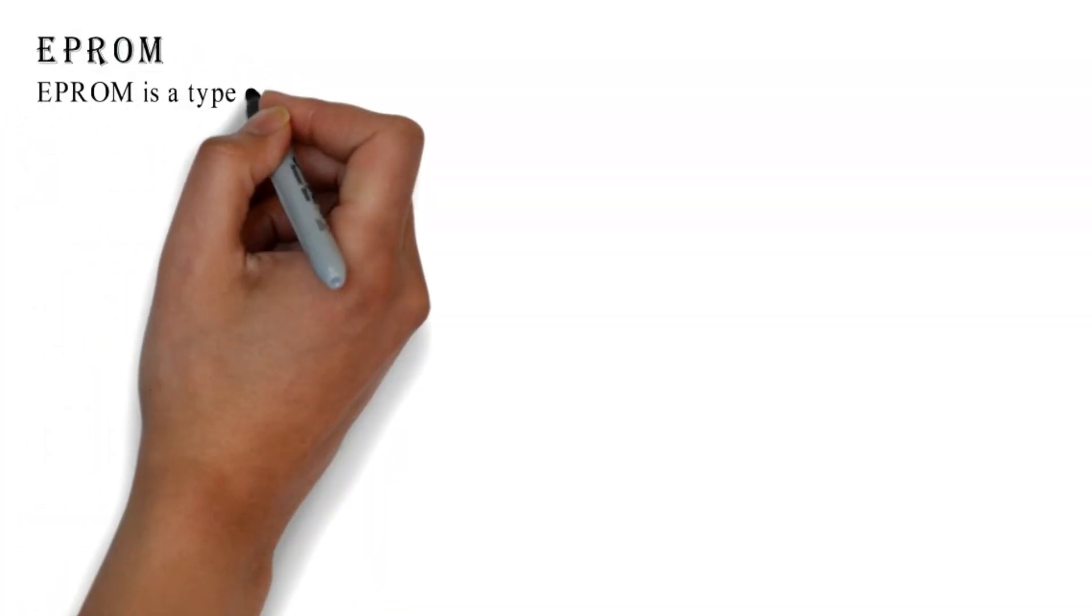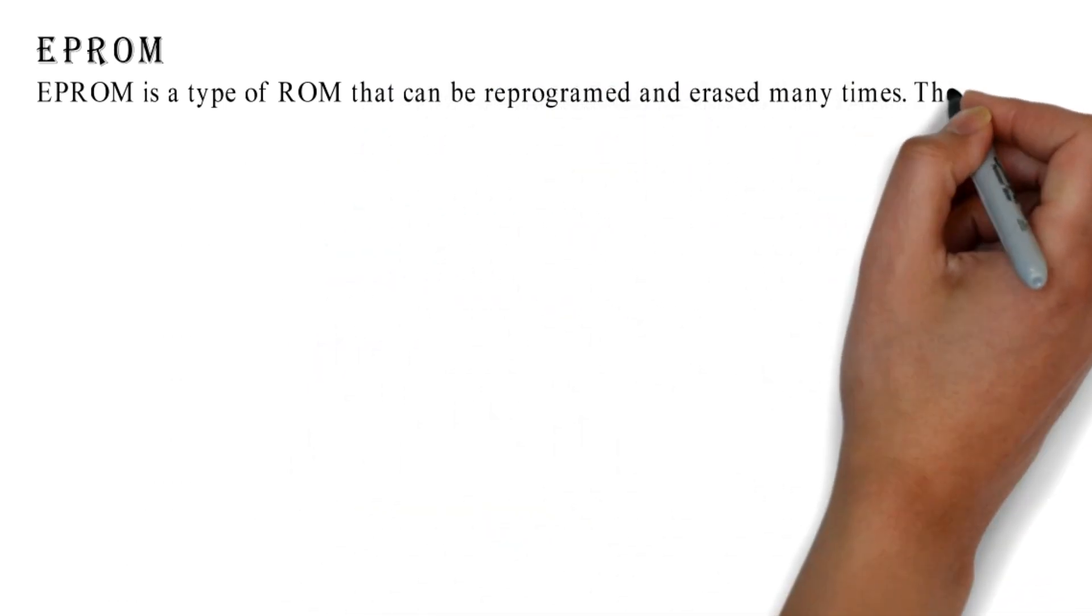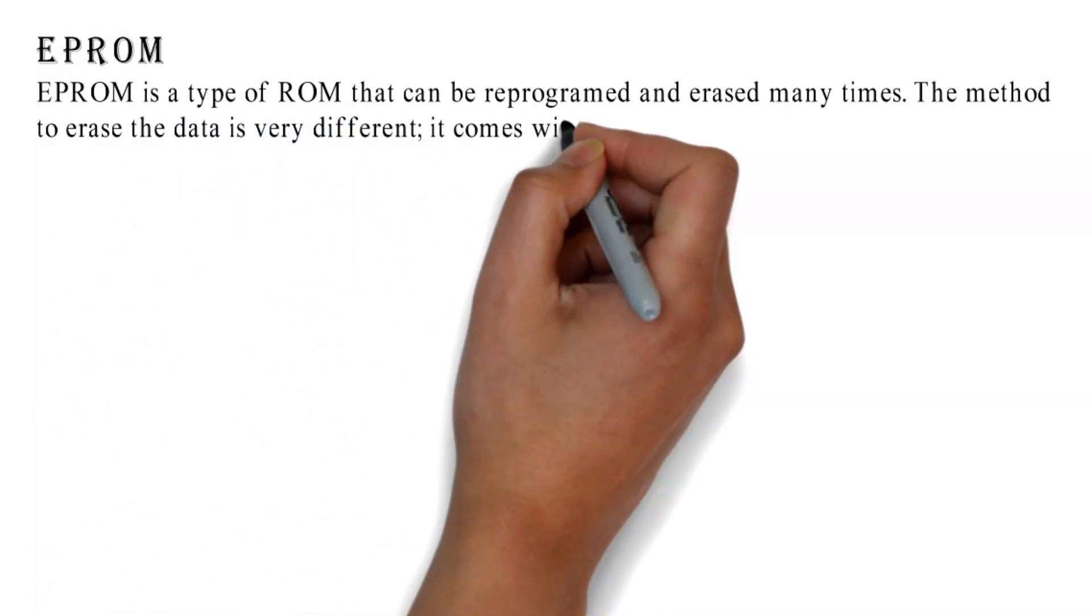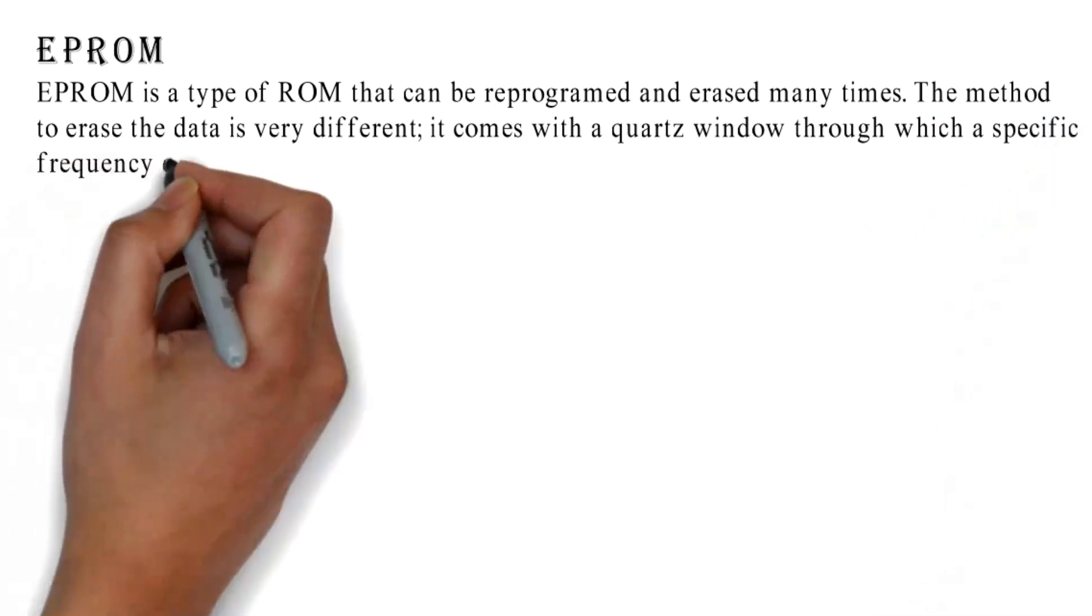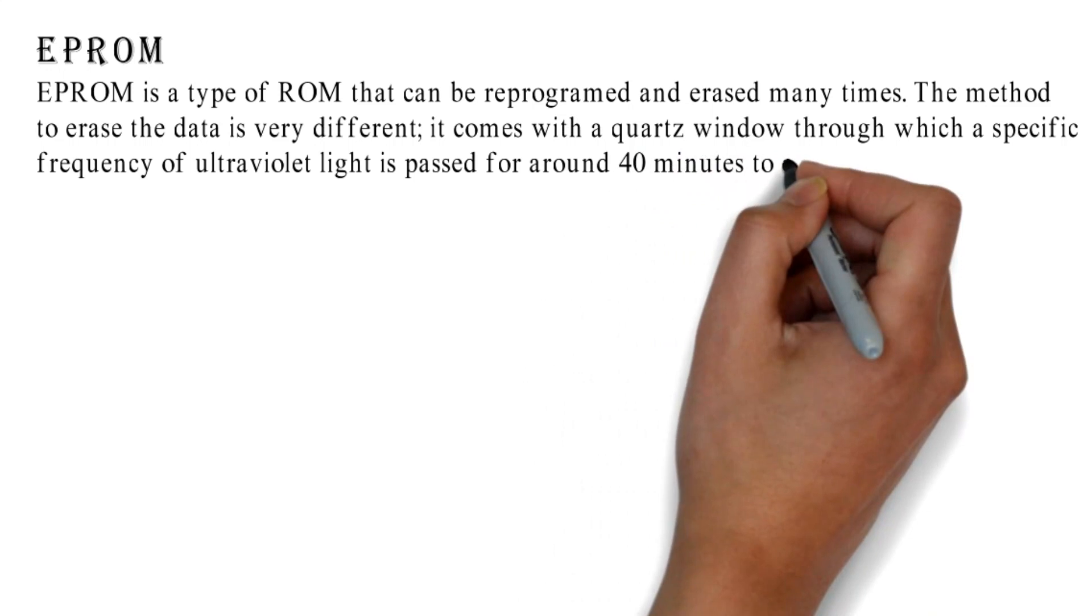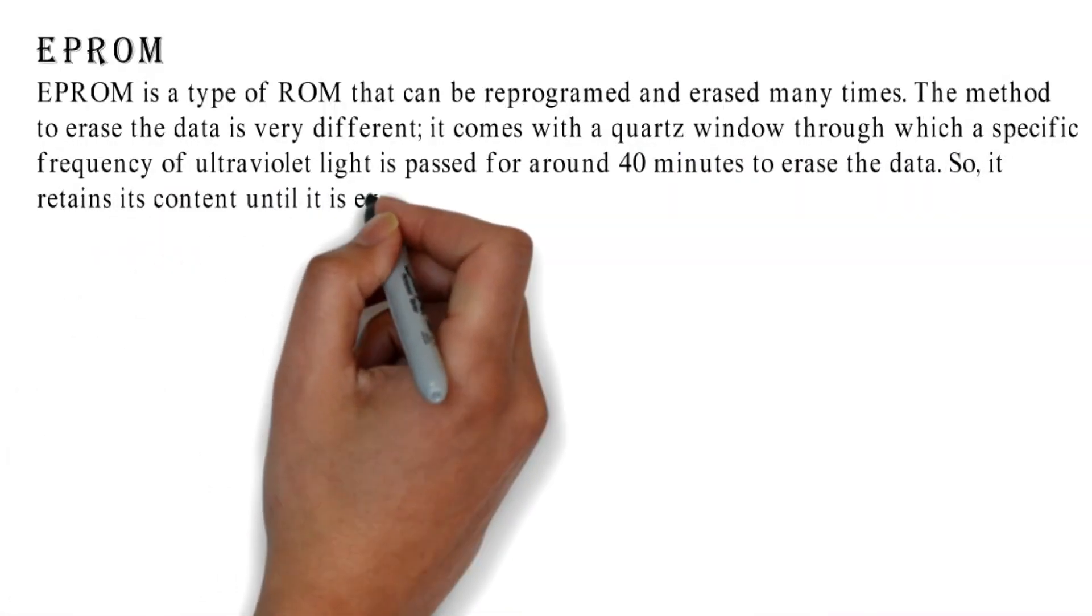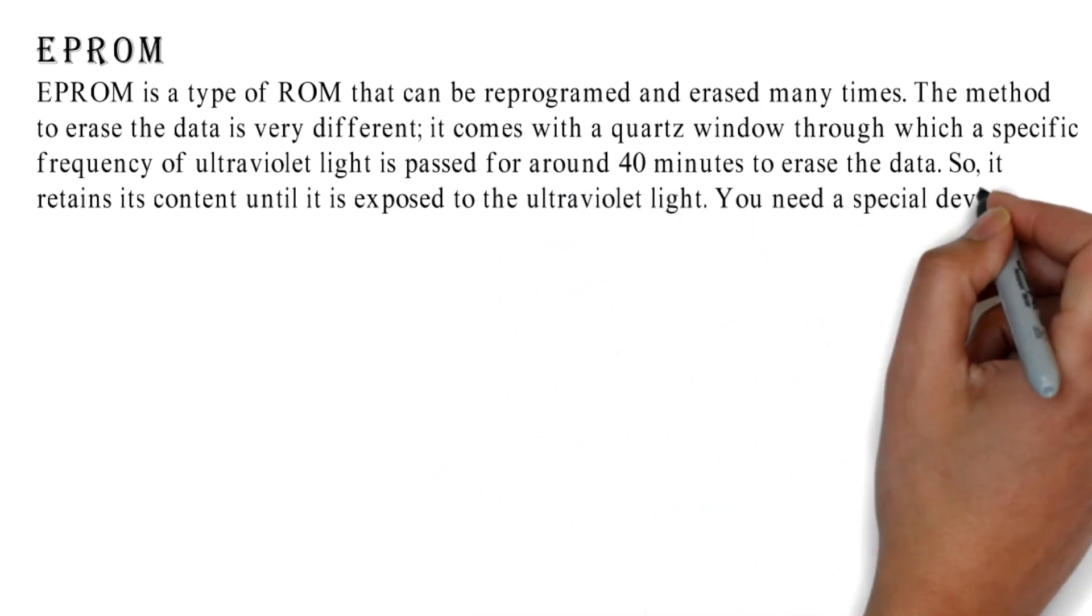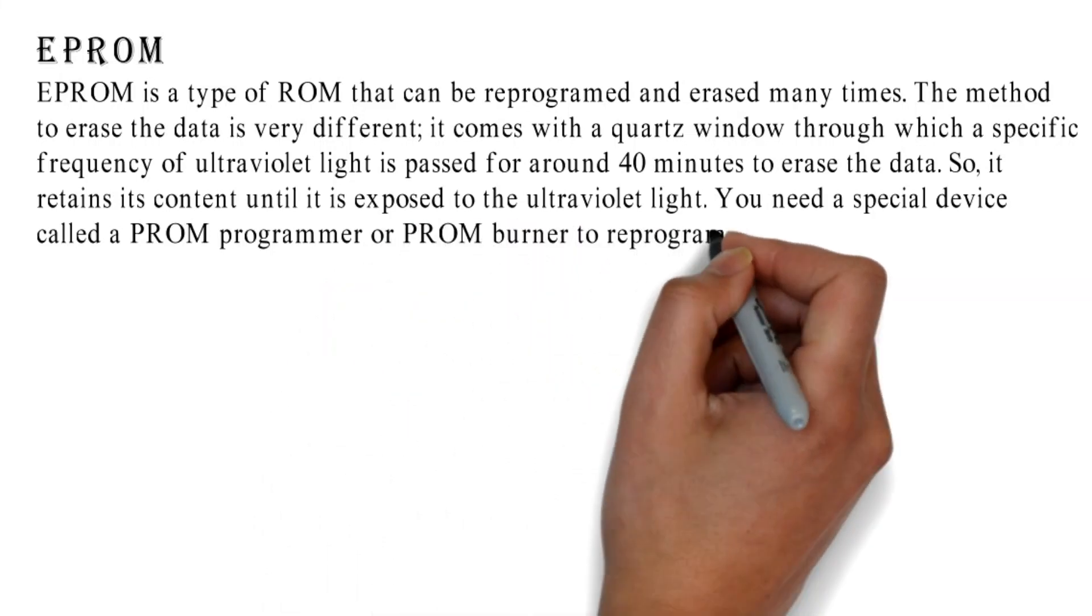EPROM is a type of ROM that can be reprogrammed and erased many times. The method to erase the data is very different. It comes with a quartz window through which a specific frequency of ultraviolet light is passed for around 40 minutes to erase the data. So, it retains its content until it is exposed to the ultraviolet light. You need a special device called a PROM programmer or PROM burner to reprogram the EPROM.